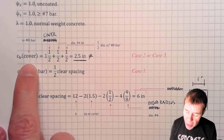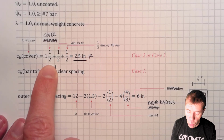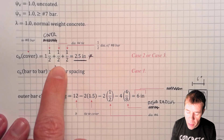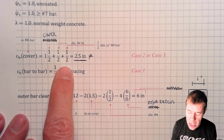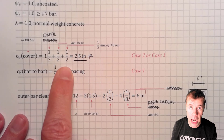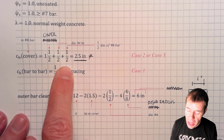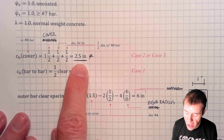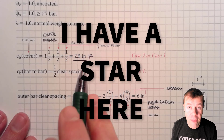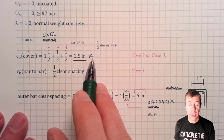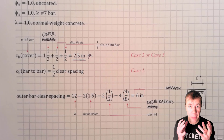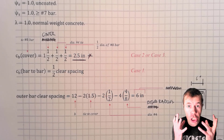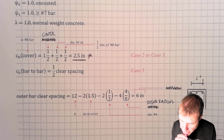My outside cover is 1½ inches — that is to the diameter of my stirrup. This accounts for the stirrup size and half the diameter of a number 8 bar. When you calculate all of that, you get 2.5 inches. I have a star here — that means it's kind of a big deal. This is something we're going to compare later on; this could control, so let's pay attention to it.